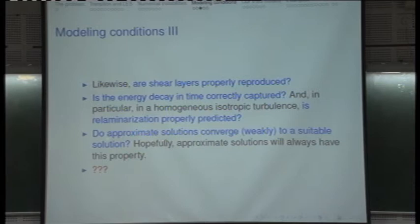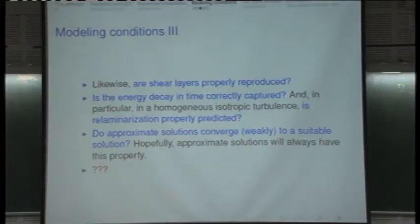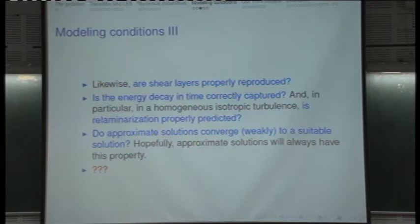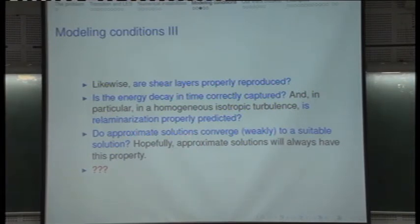There is also a theoretical question: do solutions converge to suitable solutions? We have to prove that the solution of our model converges to a suitable solution — the definition introduced by Sheffer, a solution that satisfies the entropy inequality. Of course, we will not be able to prove uniqueness — we would win one million dollars. But in our group, we have proved that the solutions do converge to suitable solutions, weakly. Our solutions converge to a suitable solution, hopefully the unique one, but we are not able to prove that.